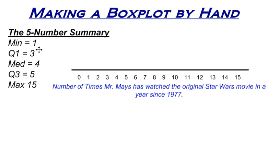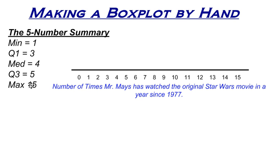One way we can use it is to make a box plot. A box plot is a way to display quantitative data, and it's one of my favorites — I love box plots. I think they're very useful, especially when you're comparing two sets of data. So here's how you make a box plot using the five-number summary.